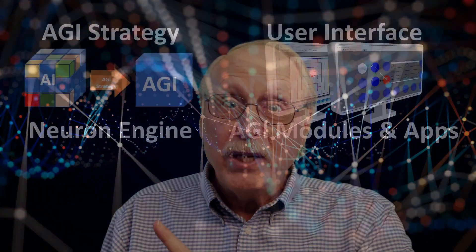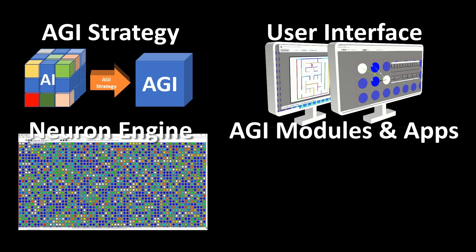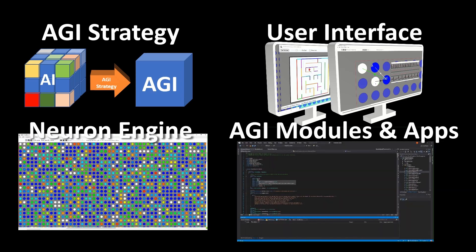In summary, the Brain Simulator 2 is completely free and open source AGI research project supporting an experimental AGI strategy with a snappy user interface, a powerful neuron engine, and numerous modules and apps.